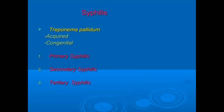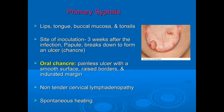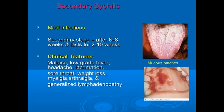There are three types of syphilis: primary, secondary, and tertiary. In primary syphilis, the lips, tongue, buccal mucosa, and tonsils are infected, with an oral painless ulcer with a smooth surface, raised borders, and indurated margins; spontaneous healing is possible. Secondary syphilis is the most infectious stage, occurring six to eight weeks after primary infection and lasting two to ten weeks. Clinical features in severe cases include low-grade fever and headache.